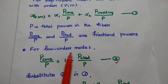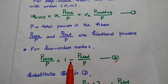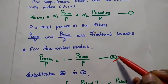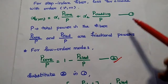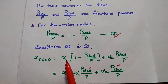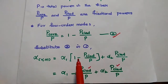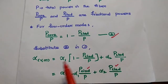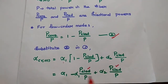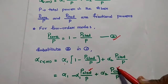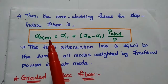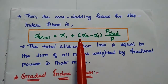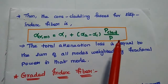For low order modes, the fractional power of the core equals 1 minus the fractional power of the cladding with respect to the total power. Substituting this second equation into the first equation, the overall propagation loss equals alpha1 times (1 minus P_cladding/P) plus alpha2 times P_cladding/P. Multiplying alpha1 inside the bracket and taking the common fractional power term, we get the core cladding loss for step index fiber as alpha1 plus (alpha2 minus alpha1) multiplied by P_cladding divided by total power.